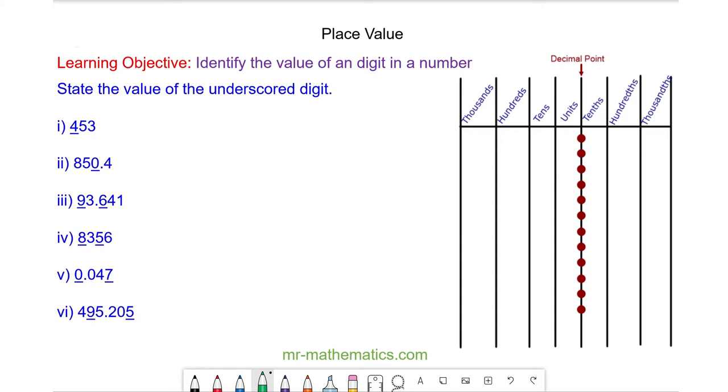We begin with 453. To use our place value table we need to understand where the decimal point goes in this number, and it is 453.000.